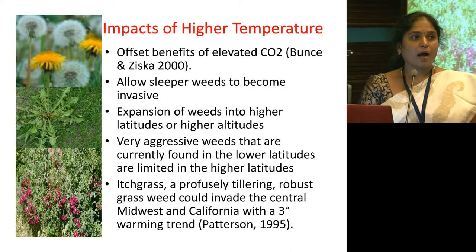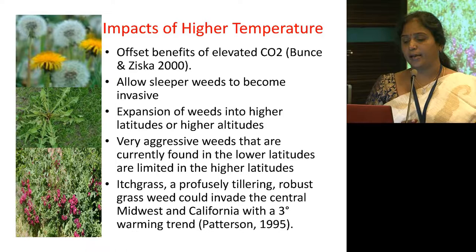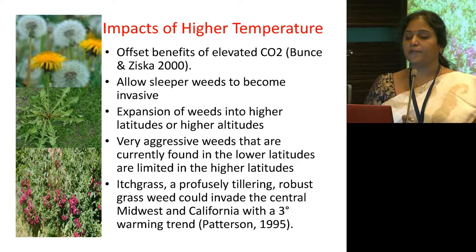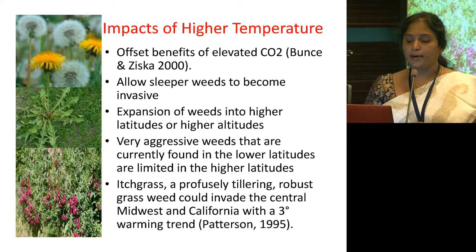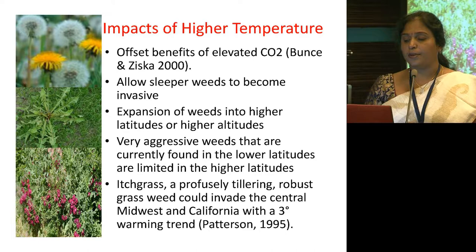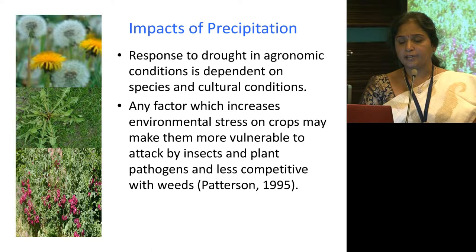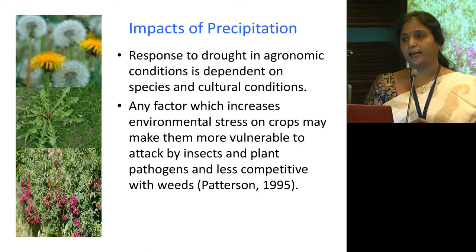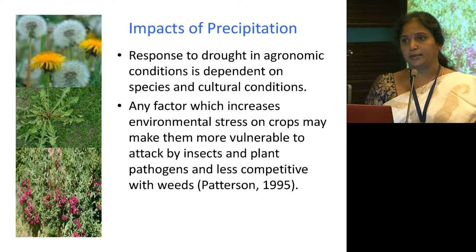Higher temperatures can also impact weeds: some benefits of elevated CO2 are offset by higher temperature. Higher temperatures allow sleeper weeds to become invasive — weeds which were less important will become more problematic in the future. Expansion of weeds into higher latitudes or altitudes can also happen. For example, itch grass — a profusely tillering and robust grass weed — could invade the central Midwest and California with a three-degree warming trend. Precipitation changes leading to drought can affect crops much more compared to weeds, so crops would always be on the negative side.